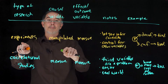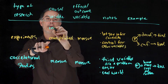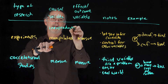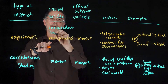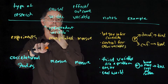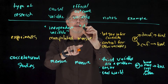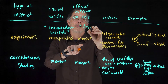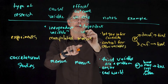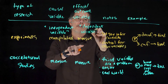In an experiment, the manipulated variable is called an independent variable, and the measured outcome variable is called the dependent variable.